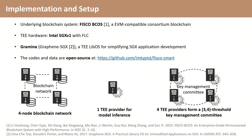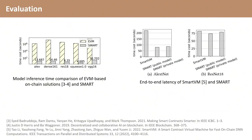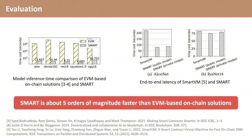We adopt FISCO BCOS as the underlying blockchain system, Intel SGX as the experiment TEE hardware, and use Gramine to support model inference inside enclaves. The codes and data are open source. Our evaluations show that SMART achieves its security goals while significantly enhancing inference efficiency, outperforming existing on-chain solutions by about five orders of magnitude.